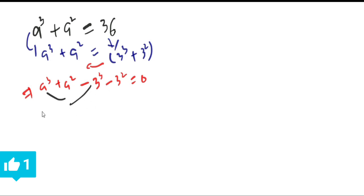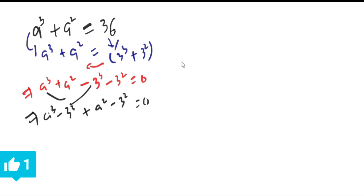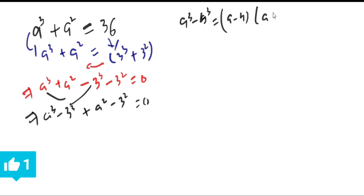We shift the cube terms to one side and the square terms to the other side, giving us a³ - 3³ + a² - 3² = 0. From the identity, a³ - b³ is equal to (a - b) into (a² + ab + b²).